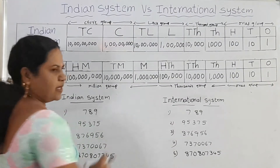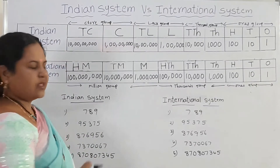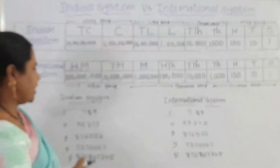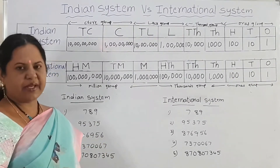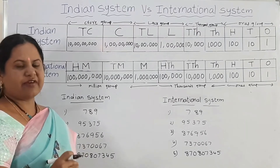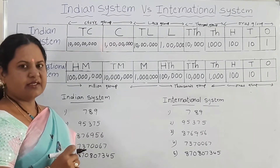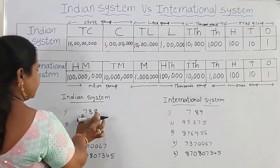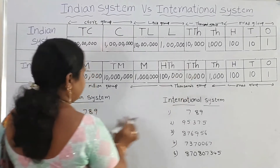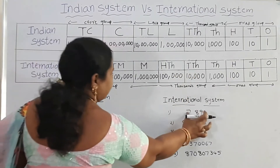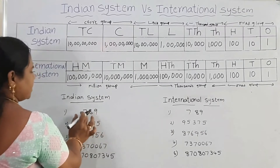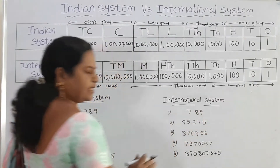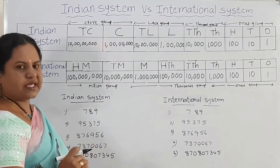Look here — we have some numbers that are the same in both the Indian system and international system. Here is the number 789, which has 3 digits. Three places means one period. This is one group, and the name is 789. In both systems, this first group is the same number.